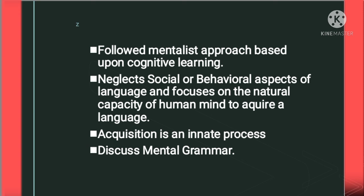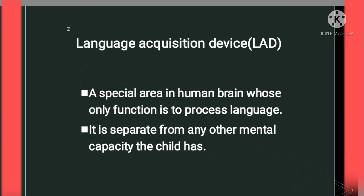There is also the language acquisition device, briefly called LAD. It is a special area in the human brain whose only function is to process language. Just as there are specific parts in the human brain — for example, a part that only recognizes colors — similarly, to acquire or learn a language, there is also a specific part in the human brain. This part of the brain is separate from any other mental capacity which the child has.